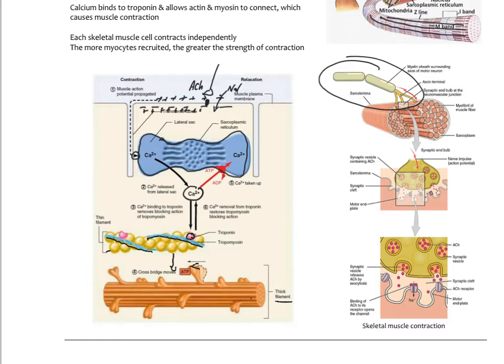Normally, myosin has little feet that stick out and can bind to the actin, but those binding sites are blocked by troponin and tropomyosin. When calcium comes into the cell and is released into the cytoplasm, it moves the troponin and tropomyosin away, allowing the myosin to bind to actin and the muscle to contract. Calcium really is the primary electrolyte needed inside the cell to allow the myosin and actin to bind together.